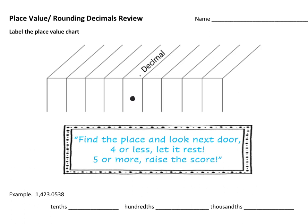The place right next to the decimal is called the ones, or the unit spot. If you have a single number, it's called the one spot. If you go one more digit over, that's called the tens spot. If you go one digit further, that's called the hundreds.